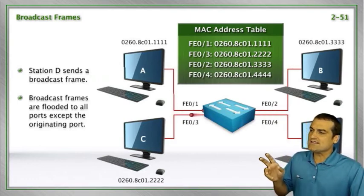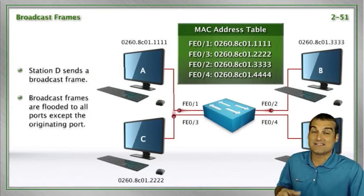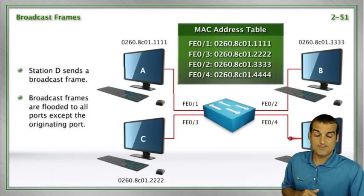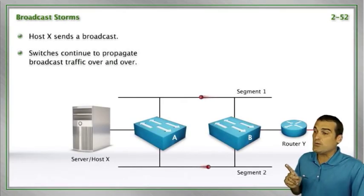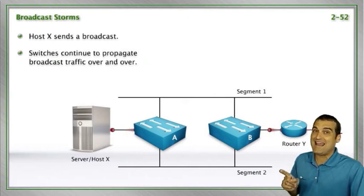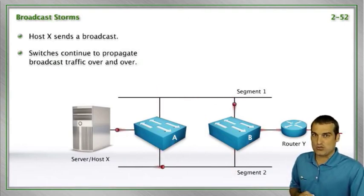So here is the transparent switch doing what it does best with the broadcasts, flooding it out those ports. Sure enough, in a redundant type of topology, that would cause immediate chaos. What do I mean by chaos? I mean a broadcast storm.